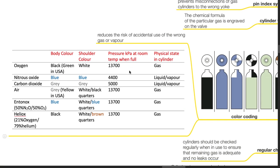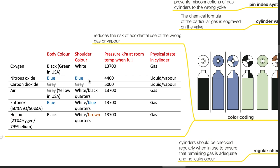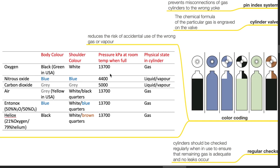For oxygen, the body colour is black, shoulder colour is white, pressure at room temperature when full is 13,700 kPa, and physical state in the cylinder is gas. Nitrous oxide cylinder has a blue body colour and blue shoulder colour. Pressure is 4,400 kPa at room temperature when full. Physical state in the cylinder is liquid and vapour.